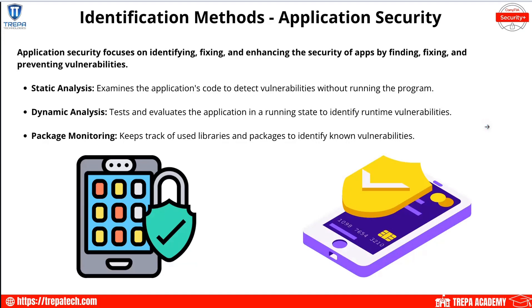Application security is another area to scan. We have static analysis and dynamic analysis, and also something called fuzzing. Application security focuses on identifying, fixing, and enhancing the security of apps by finding and preventing vulnerabilities. Static analysis — which we touched on in domain 4.1 — examines the application's code to detect vulnerabilities without running the program. This means looking at the source code, opening an IDE like VS Code, reviewing it with a senior engineer, and maybe using IAST — interactive application security testing — with a plugin to look for obvious vulnerabilities in the code.